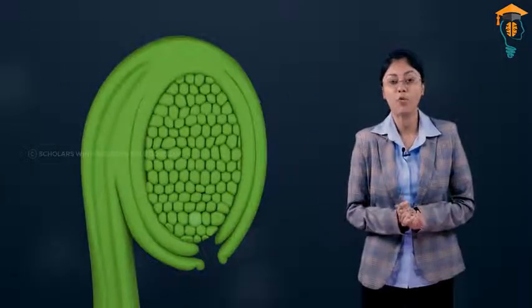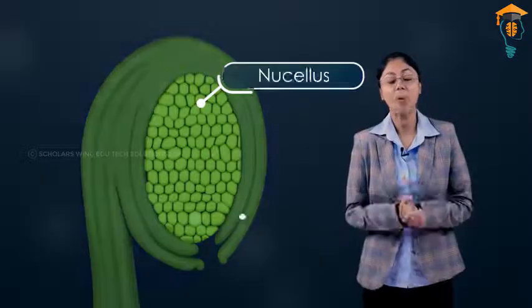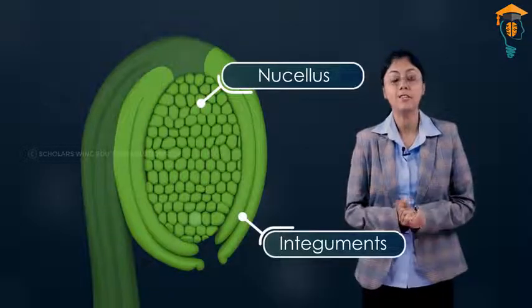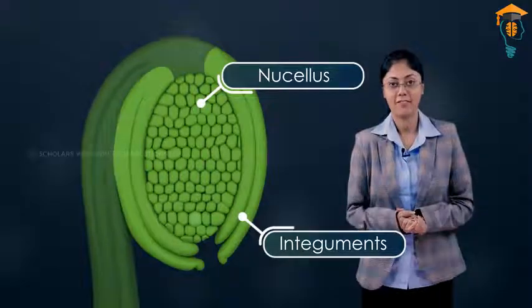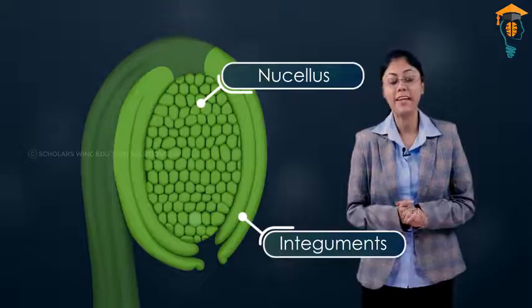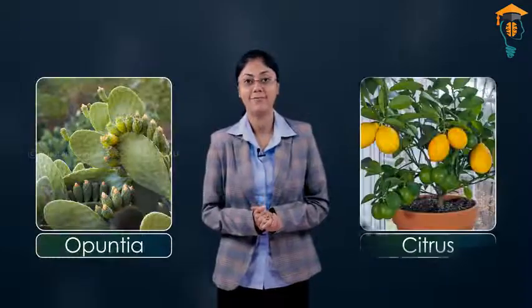The second type is sporophytic budding, also called adventive embryony. In this case, the diploid cells of the ovule — like the nucellar cells or the integuments — directly produce a diploid embryo without fertilization. This is commonly observed in plants like Opuntia and citrus.